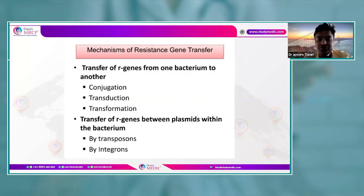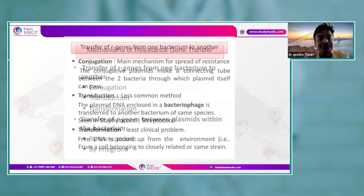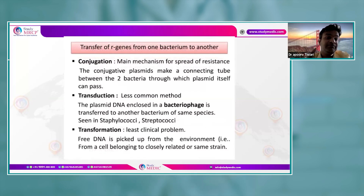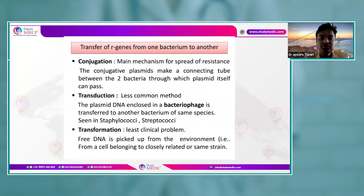Mechanisms of resistance gene transfer include: transfer of R genes between plasmids within a bacterium via transposons or integrons; and transfer of R genes from one bacterium to another, mainly by conjugation — the main mechanism of resistance spread — where conjugative plasmids form a connecting tube between two bacteria through which the plasmid passes; or by transduction.